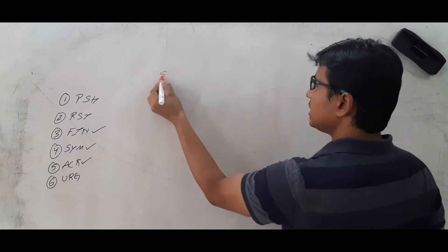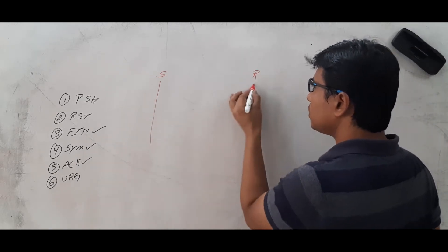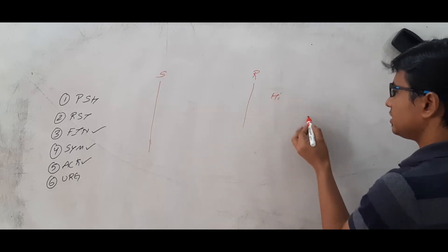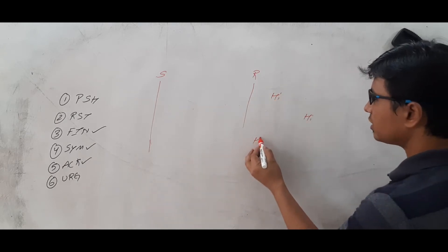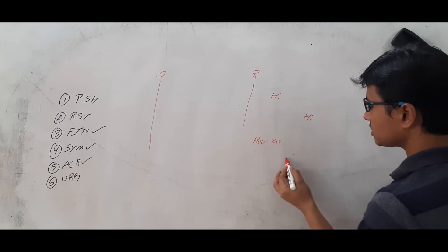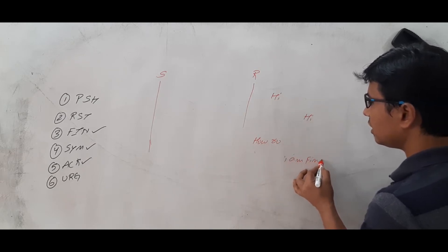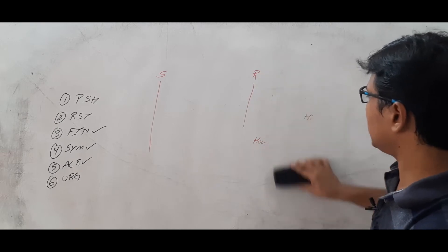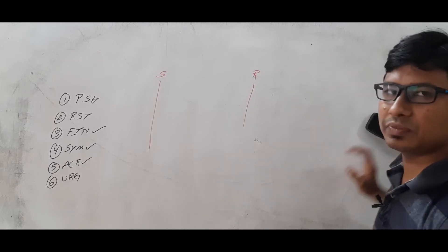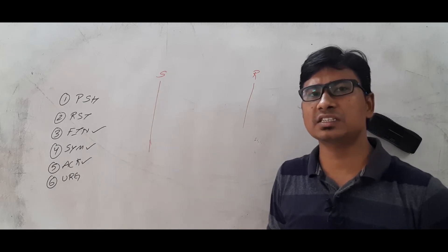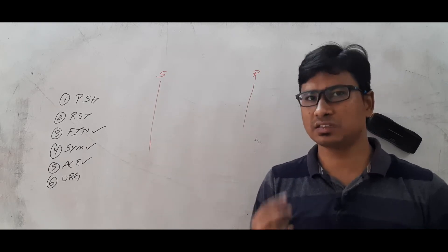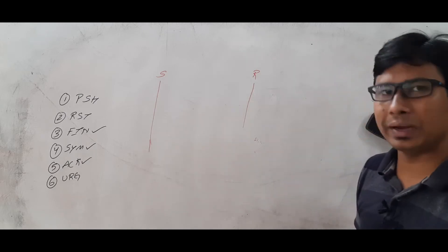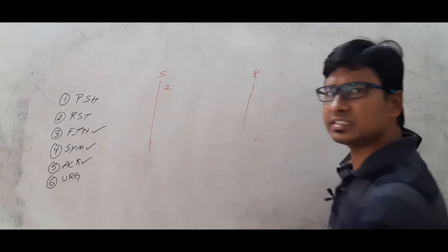Now in this video let me discuss what is the use of the push flag and when it will be enabled. Let's take that the sender and receiver want to have interactive communication. What is meant by interactive communication? For example, sender says 'hi', receiver also sends 'hi', then 'how are you?' and the reply 'I am fine'. This kind of communication is normal chatting, which we call an interactive application. Now let's take that the sender wants to send an interactive message such as 'hi'. How many bytes is it sending? Two bytes, because 'h' takes 8 bits which is one byte and 'i' also takes one byte.